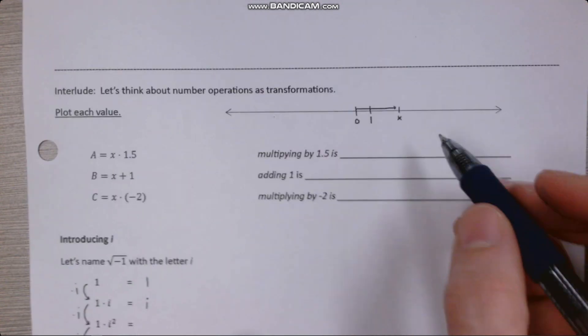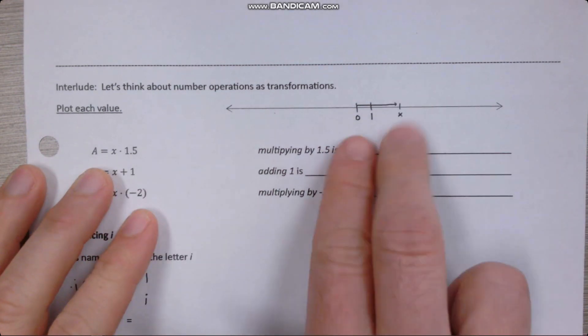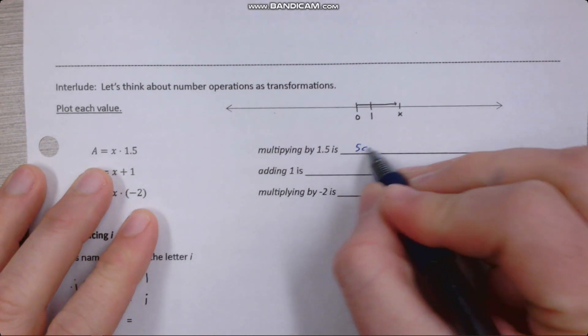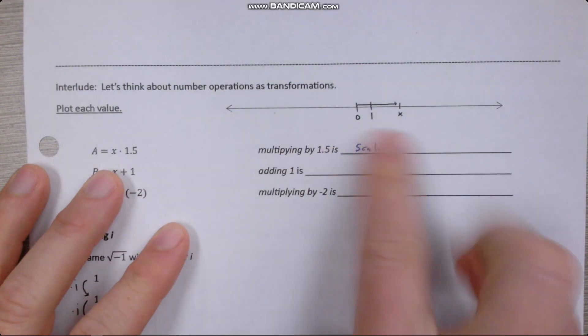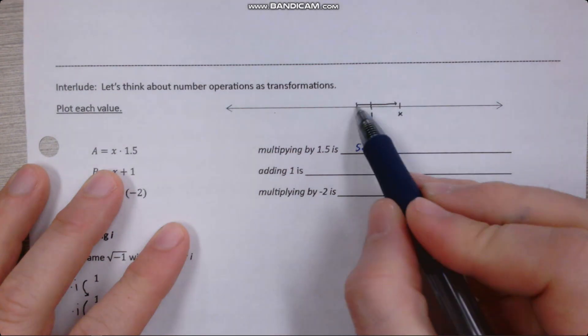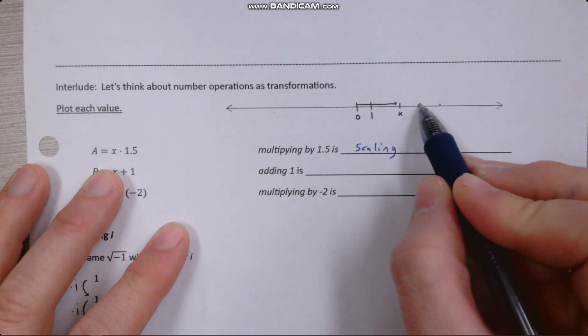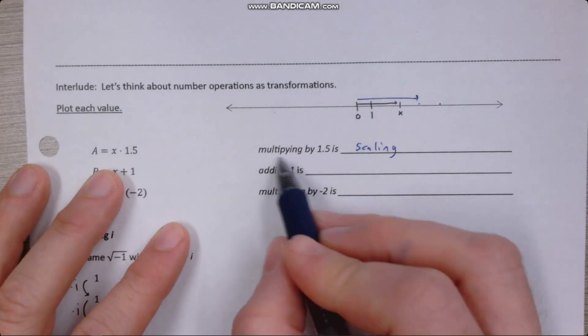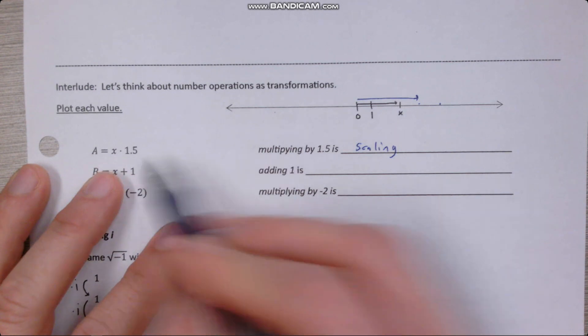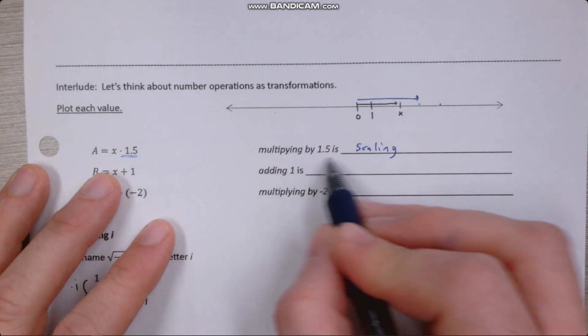All right. So one and a half x would be like scaling, or to use a less technical term, stretching the value of x one and a half times its original length. So if this is its original length, twice its original length would be here, so one and a half times would be about there. But the point I want to draw out is you can imagine multiplying by a real value as scaling.